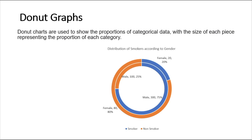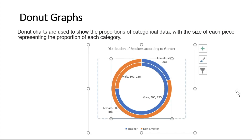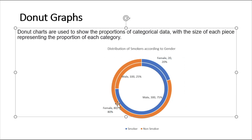Donut charts are used to show the proportions of categorical data, with the size of each piece representing the proportion of each category. This figure shows the distribution of smokers according to gender. Blue indicates smokers and orange indicates non-smokers. The outer circle represents females and the inner circle represents males. Out of total females, 20 percent are smokers and 80 percent are non-smokers. Out of total males, 25 percent are non-smokers and 75 percent are smokers. The advantage of donut charts over pie charts is that we can represent data for two or more categories.